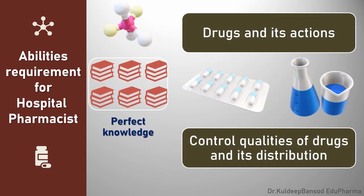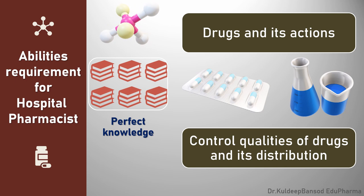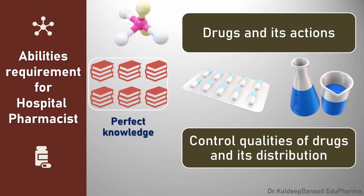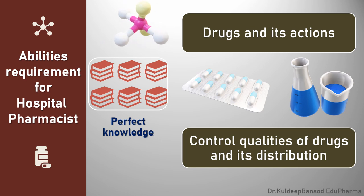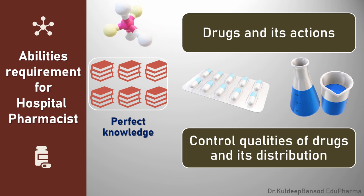He should possess sound knowledge of drugs and their action. He must have perfect knowledge regarding chemistry, pharmacology, pharmacokinetics, pharmacodynamics, toxic effects of drugs, routes of administration, and other related information. He must be able not only to control the quality of drugs but also to control the distribution of drugs throughout the hospital, and must have adequate control in selecting and manufacturing drugs. Purchasing of drugs should be done on the basis of perfect knowledge of drugs and their action.